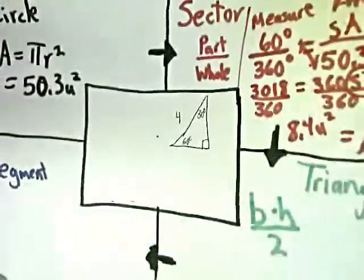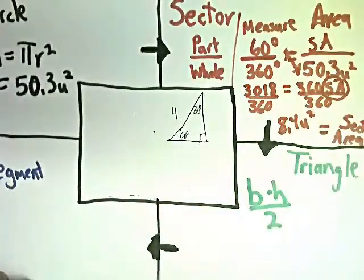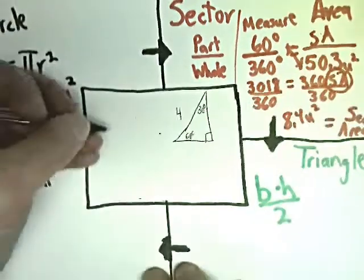Now, then I have to think about what that generic 30-60-90 triangle looks like.